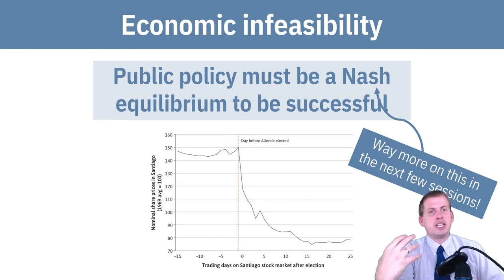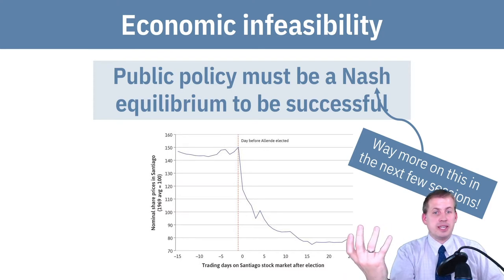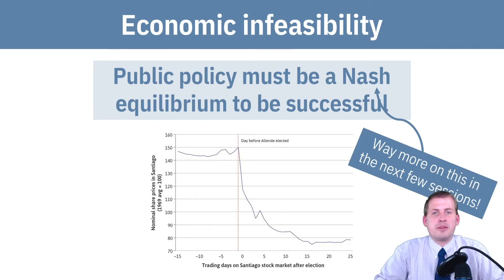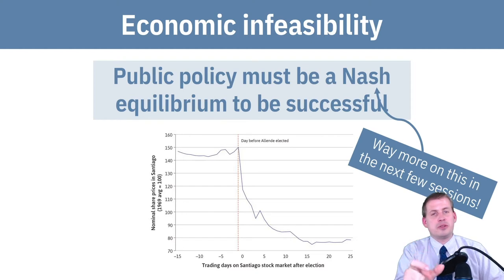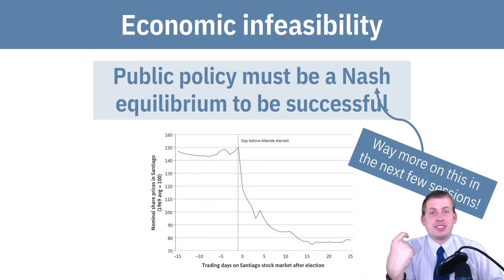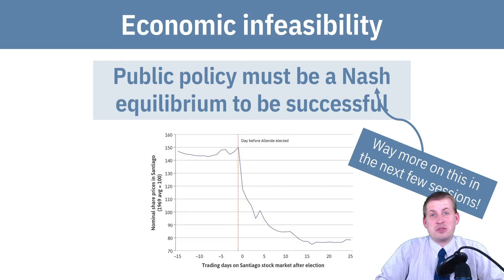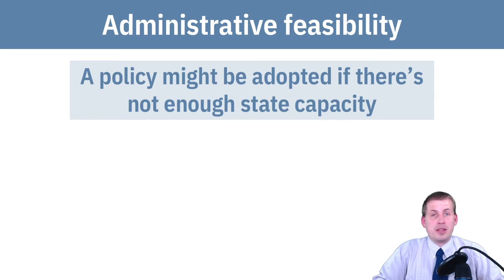The example from the book is Salvador Allende in Chile. He promised when elected that he would nationalize all industries in Chile, and he did. As a result, the Chilean stock market totally crashed and the economy sank, because that was the natural reaction from companies in the country — it wasn't the best policy for both parties. Everyone shifted to a different outcome that wasn't anticipated, causing a government failure.